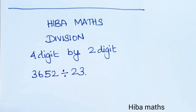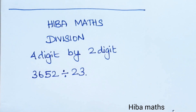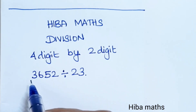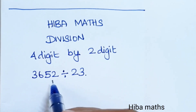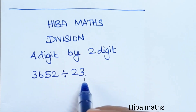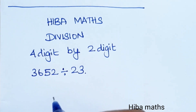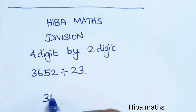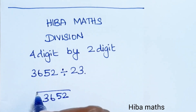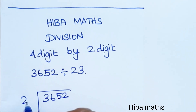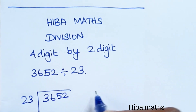Hello students. In this video we will divide a 4-digit number by a 2-digit number. Our problem is 3652 divided by 23.